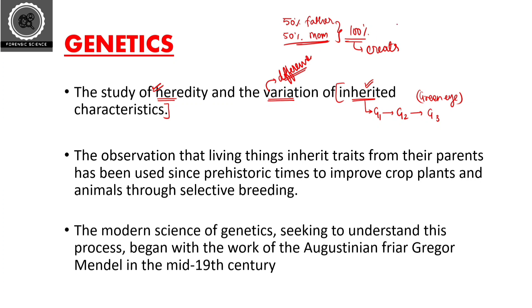For example, consider bacteria — all bacteria look exactly the same because bacteria duplicate 100 percent of their DNA for their offspring, transferring DNA to the next generation exactly as it is. That's why the next generation of bacteria looks exactly the same as the first generation. But in humans, we have some similarities with our parents but are entirely different from them — that is variation. The study of heredity and variation is nothing but genetics.